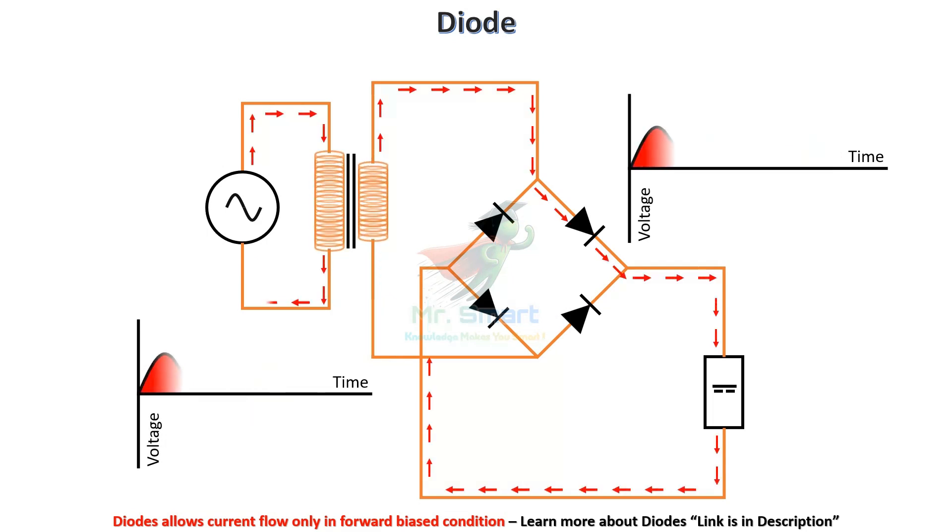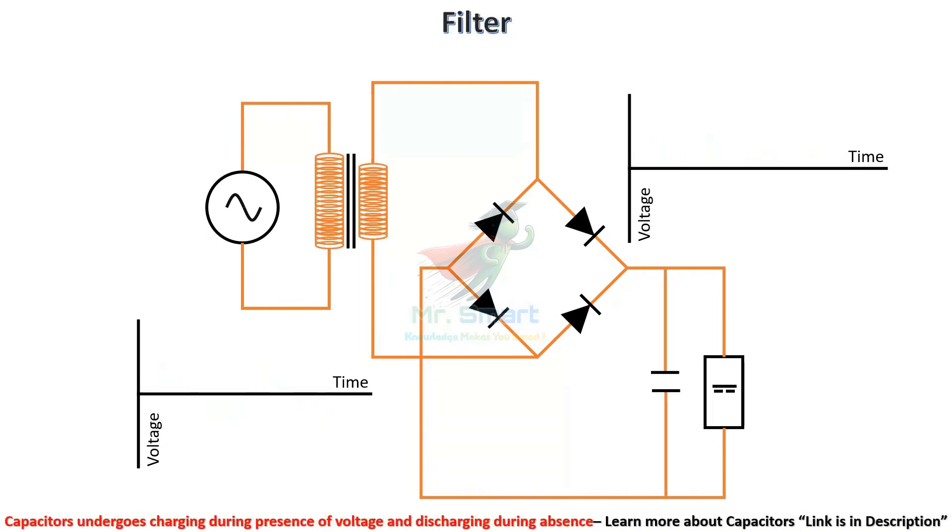The DC output created by the diodes is pulsating and not stable. Hence the rectifier requires a component to provide a more stable DC output: the filter.